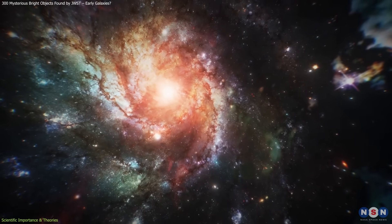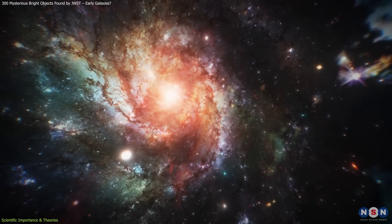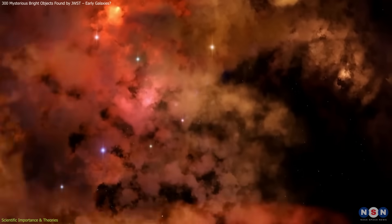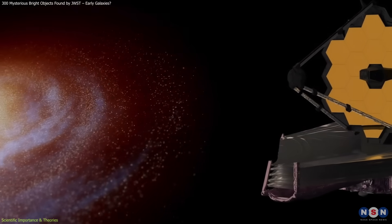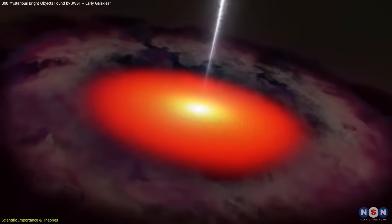Dusty starburst galaxies, rich in gas and dust and forming stars at high rates, can appear extremely red in infrared images, as can certain types of active galactic nuclei.